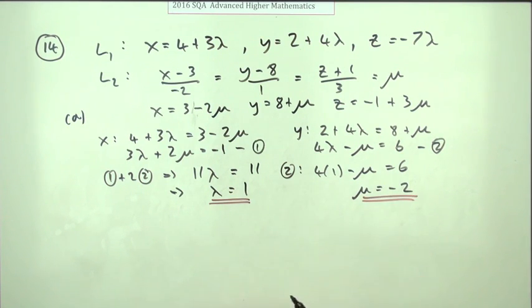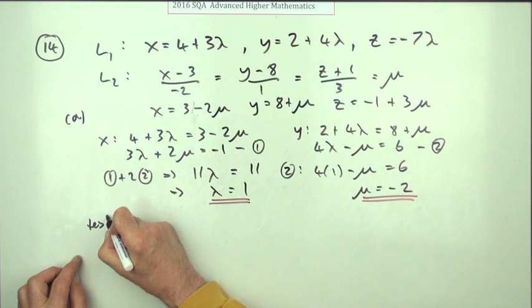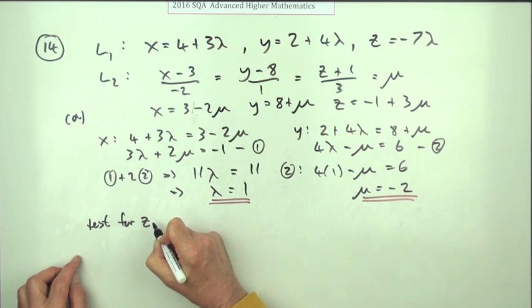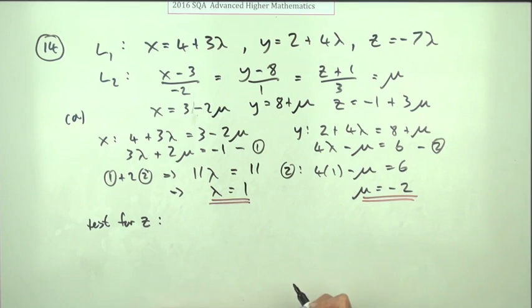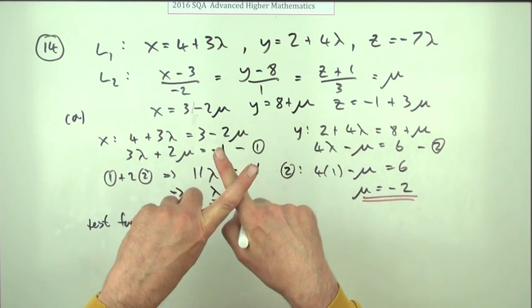Now assuming that those are correct because I've got nice numbers I'm not going to verify my x and y yet. I need the critical test. I need to test the z coordinates. The z coordinates would have to be the same if the lines actually met.